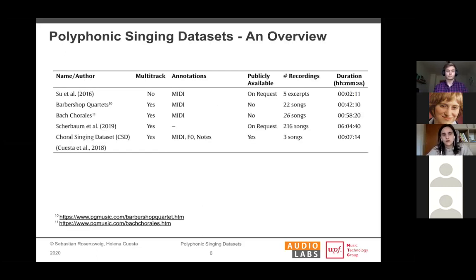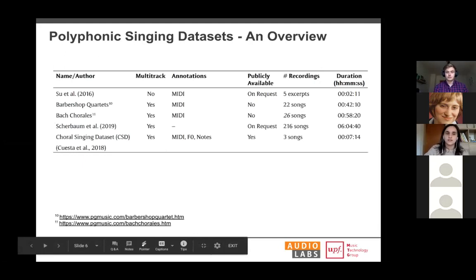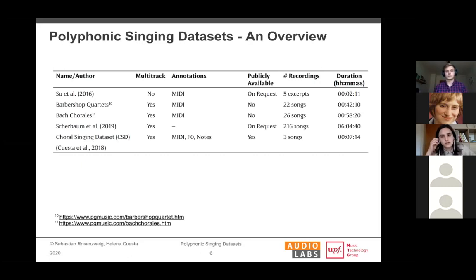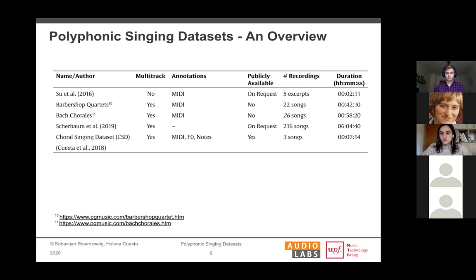We wanted to give an overview of some existing datasets of polyphonic vocal music. The first one, released in 2016, is a small dataset of choir recordings — specifically five short excerpts of western choral music. It's not a multi-track dataset; it contains commercial recordings with a single microphone. It has MIDI annotations and can be used for evaluating multi-pitch estimation systems, though it's not publicly available — available on request.